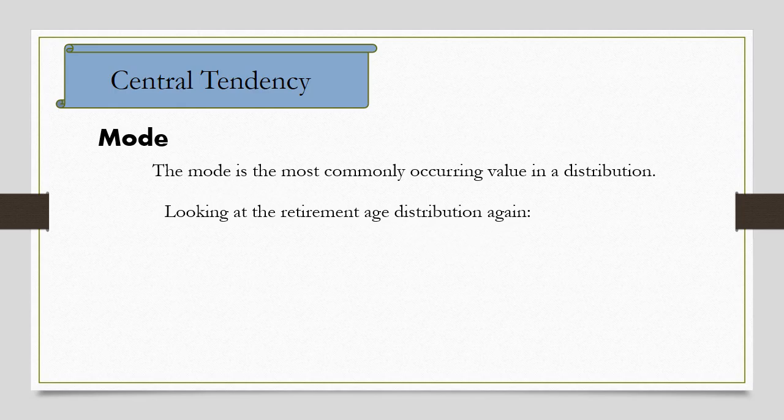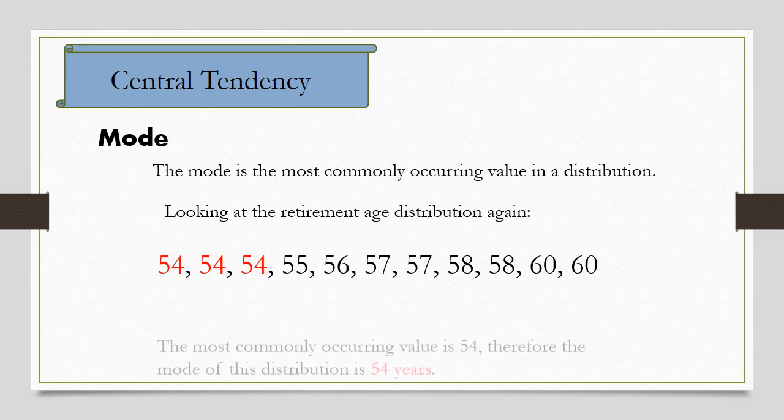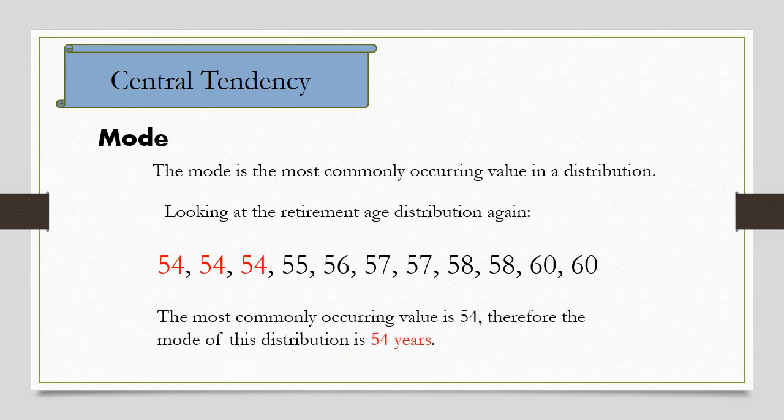Looking at the retirement age distribution again: 54, 54, 54, 55, 56, 57, 57, 58, 58, 60, and 60, the value that occurs most commonly is 54. So, the most commonly occurring value is 54. Therefore, the mode of this distribution is 54 years.